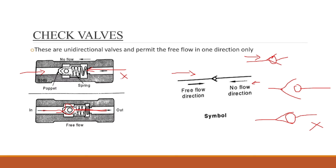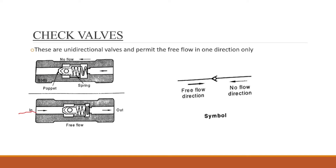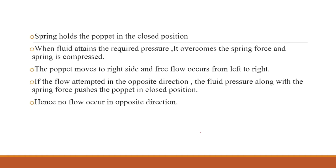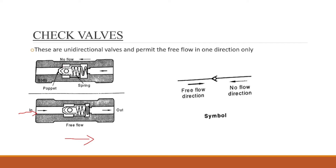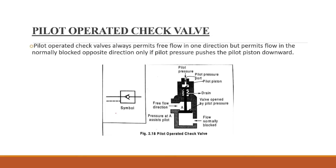When the poppet moves to the right side, the spring is compressed, allowing flow from left to right. In the opposite direction, the fluid pressure plus the spring force pushes the poppet onto its seat, holding it closed. The poppet returns to its seat and no flow is possible in that reverse direction.